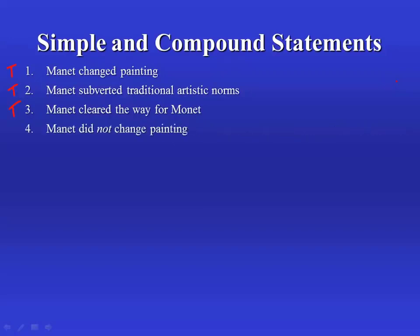Consider number four: Manet did not change painting. We haven't taken two simple statements and put them together here. We've taken one simple statement, number one, and negated it with the 'not' in the center there. We count this as a compound statement because the 'not' operator allows us to make a more complex statement out of a simpler statement. Given that we've taken number one to be true, the truth value of number four is false. The negation of a truth is a falsehood.